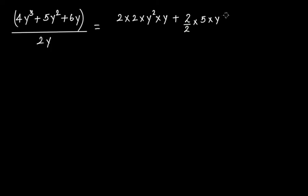If you write 5y² as y × y, then 2/2 means just 1, so 1 × 5y² gives you the same term. We want to write this as 2 × 5/2 — both are the same thing. Then you have plus 6y.